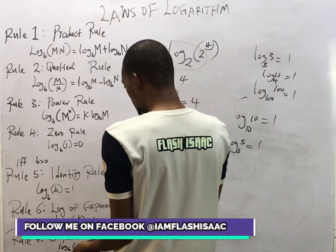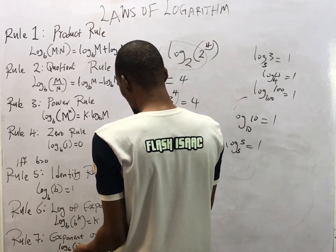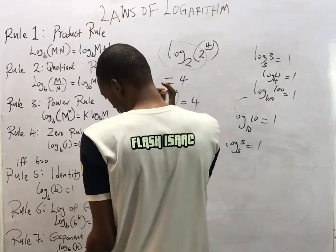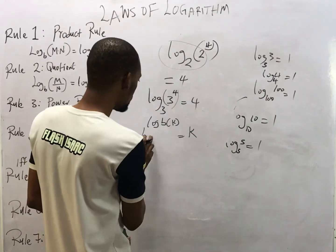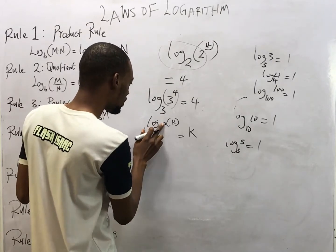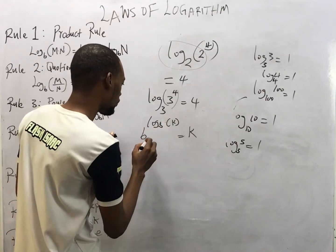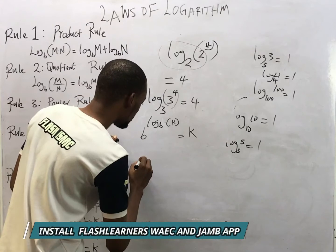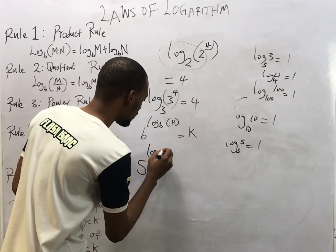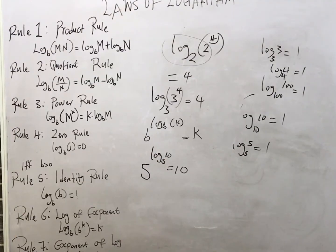The seventh rule is the exponent of log. It states that b raised to the power of log base b of k equals k. So when the base of the exponent and the base of the log are the same, your answer is simply k. For example, 5 raised to the power of log base 5 of 10 equals 10.